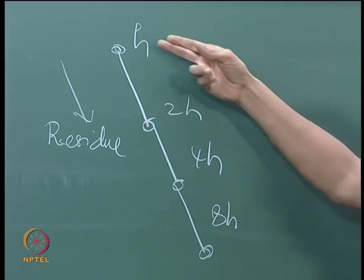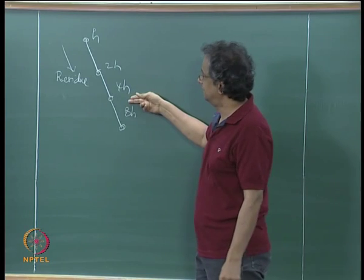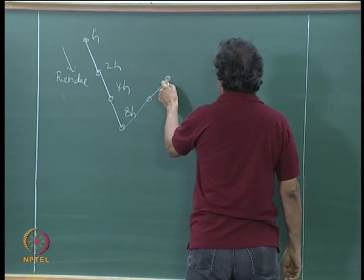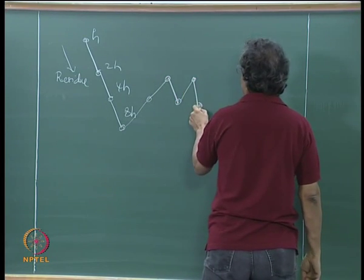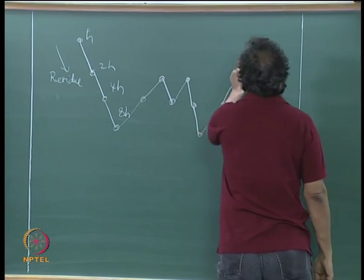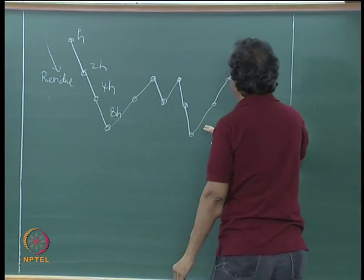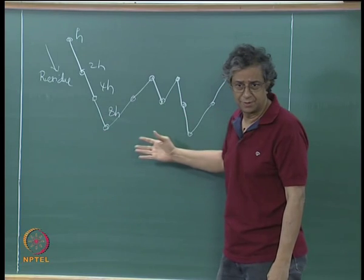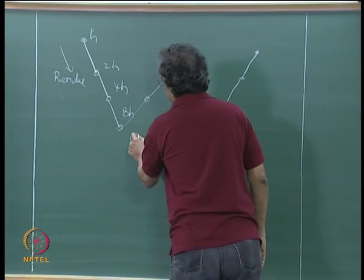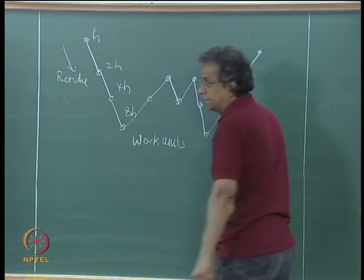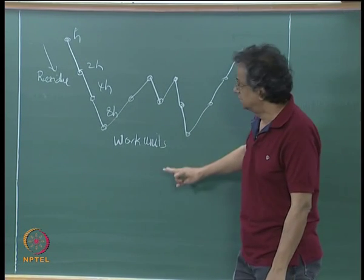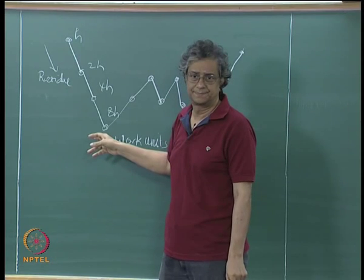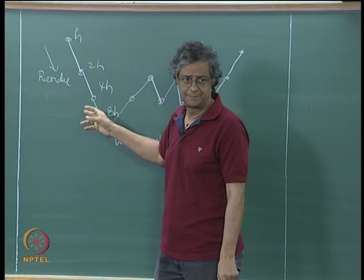The obvious question is: why go from h to 2h — why not go from h to 4h directly? We talked about having a V cycle or a W cycle. You could have different kinds of cycles. Earlier I suggested we want to stay at the lower end because the number of work units being used is less. So why bother with intermediate steps? There is a logic to it.